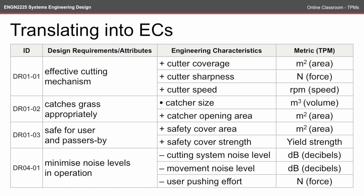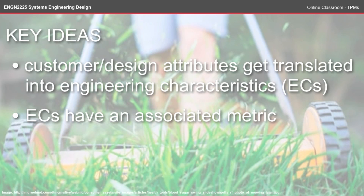As a recap of the key ideas: we take customer design attributes and translate them into engineering characteristics, and each EC has an associated metric, which will help us with comparisons and benchmarking later on. Make sure you do the reading available on the course website for this topic, and then do the self-test available on WADL. See you next time.